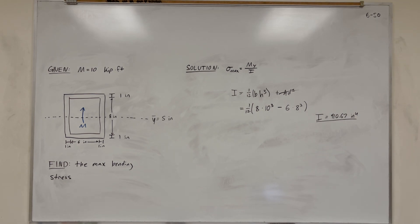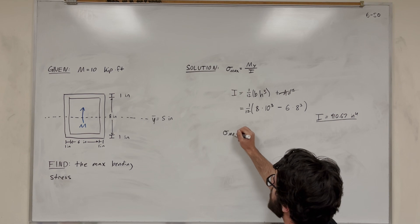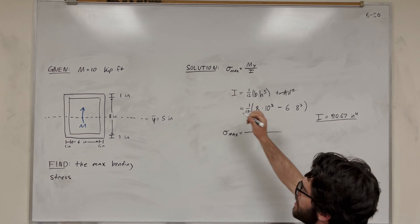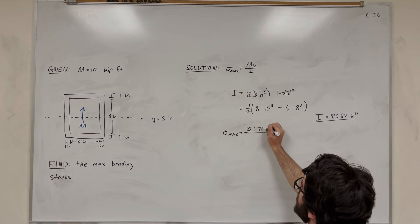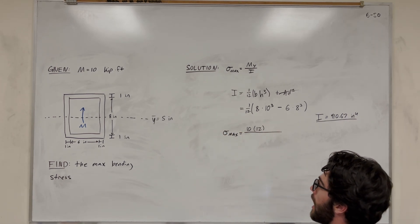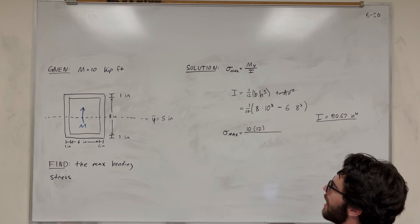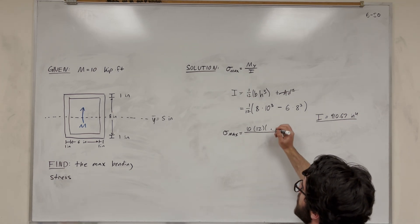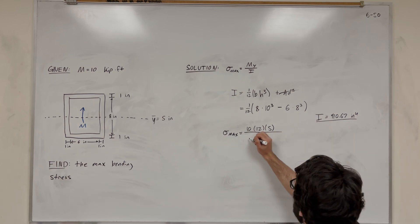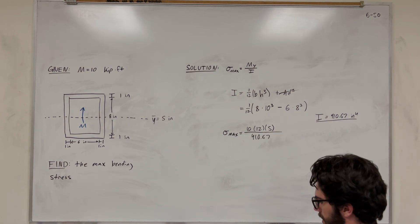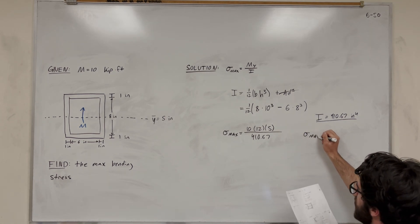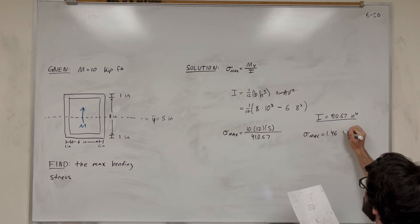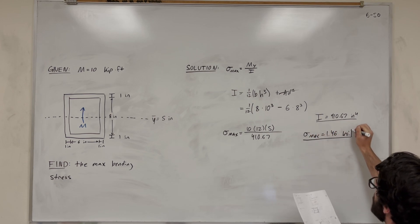So then we can find max bending stress by just plugging it in. All right, so the equation, max bending stress is equal to moment 10 kip-feet, so let's just keep it in kips. Moment is in feet, so we need to convert it to inches because this is going to be in KSI. So then y, like we said earlier, it's 5 inches. And then I is 410.67. So max is equal to 1.46 KSI. And that's our answer.